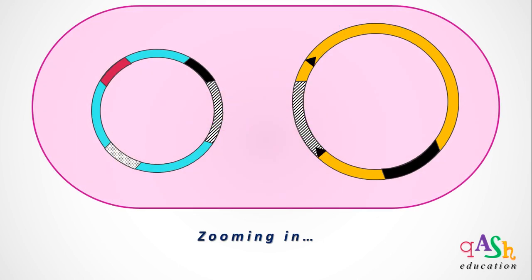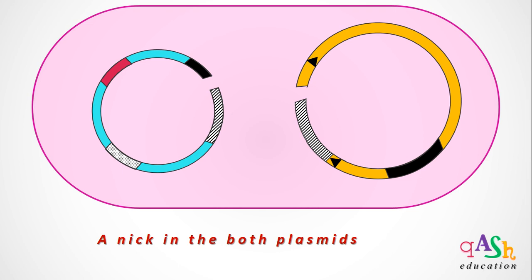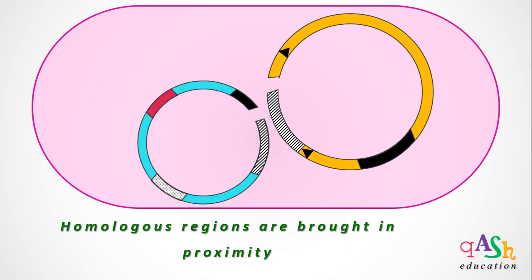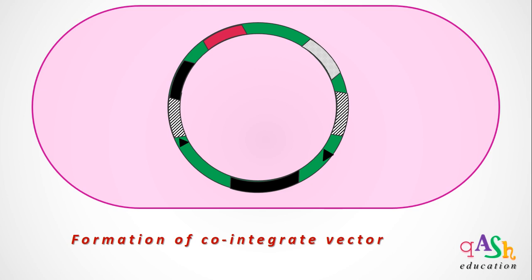Now let's zoom in to understand the process of homologous recombination between the two plasmids. The process occurs at the common pBR322 sequences that are present on both plasmids. A nick is made in both plasmids at the pBR322 sequences and they are brought into proximity. This is followed by the invasion of a strand from the intermediate vector into the DNA strand of the disarmed Ti plasmid. The two then combine and form the co-integrate vector system.